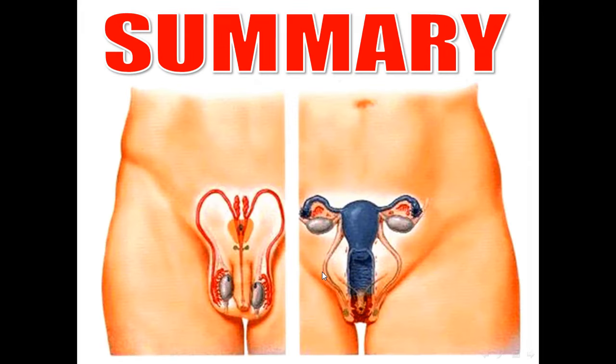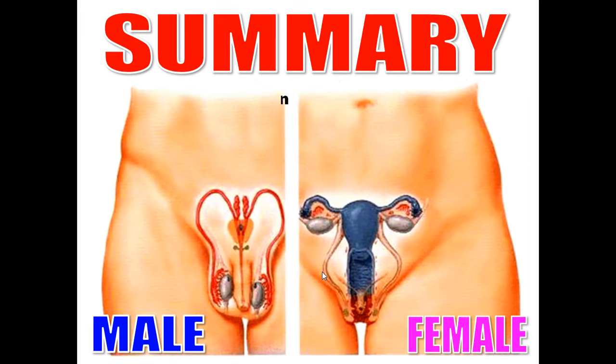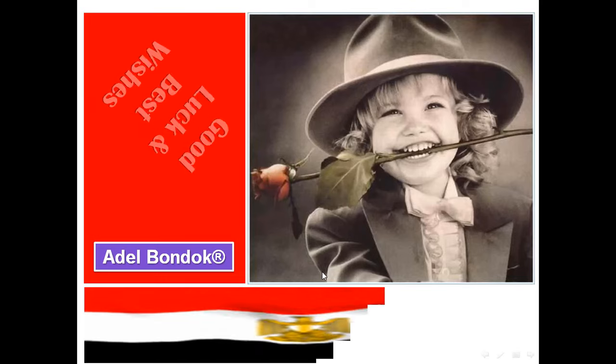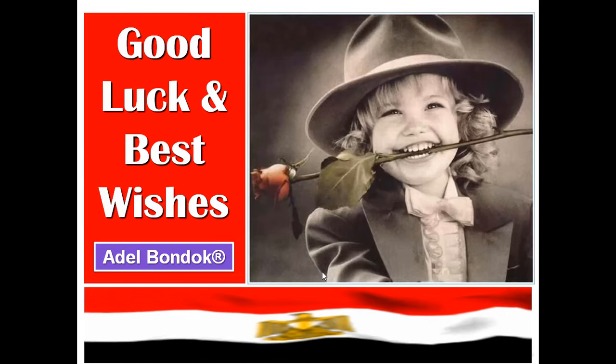In summary: the primary sex organ in the male is the testis, and in the female is the ovary. Secondary sex organs in the male are the epididymis, vas deferens, seminal vesicle, ejaculatory duct, prostate gland, bulbo-urethral glands, and urethra. In the female: uterine tubes, uterus, and vagina. External genital organs: penis in the male, vulva in the female. Thank you very much — good luck and best wishes.